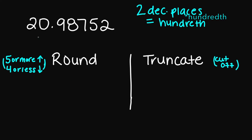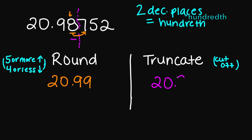If I have to round to two decimal places, counting one, two puts me right here in the hundredths place, which is the 8. If I look next door, I have a 7, which is five or more, so I need to round up. Adding one to this 8 gives 20.99. And if I truncate to two decimal places, I'm stopping right here and cutting it off, so the answer is 20.98.